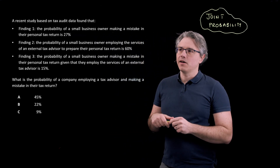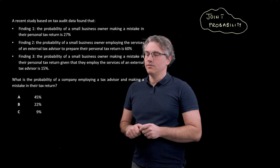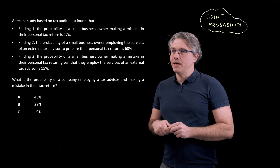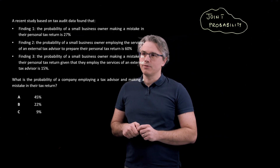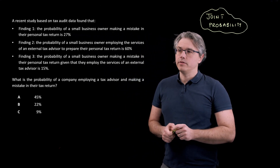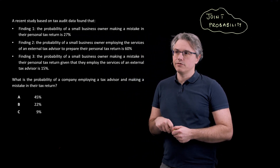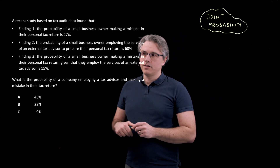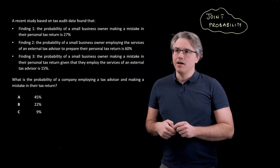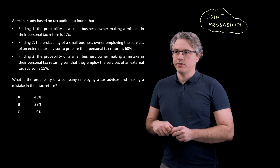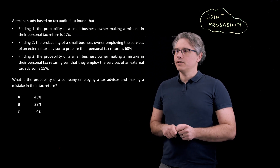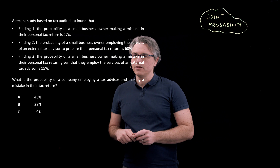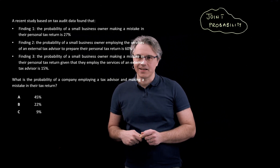This is the question I want us to have a go at. A recent study based on tax audit data found three things: the probability of a small business owner making a mistake in their personal tax return is 27%; the probability of a small business owner employing the services of an external tax advisor is 60%; and the probability of making a mistake given they employ an external tax advisor is 15%. What is the probability of a company employing a tax advisor and making a mistake in their tax return?